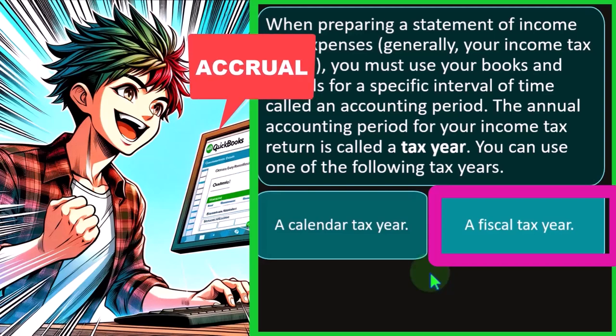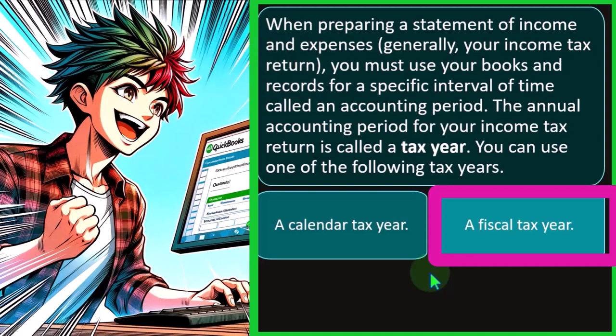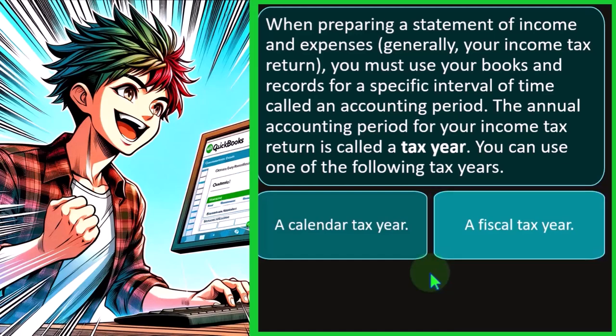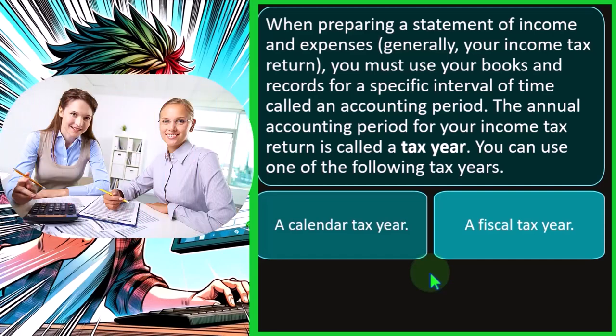We have to determine what the regulatory authorities are that we're trying to conform to in order to create our financial statements. With regards to small businesses, if they're basically building their books just to do their tax return, then the people that we're trying to tailor our financials to is the tax code. So the tax code is the thing that's going to help us determine whether or not we have an appropriate accounting method.